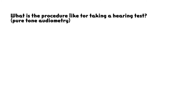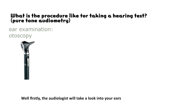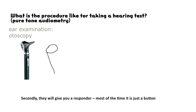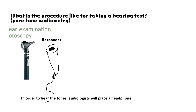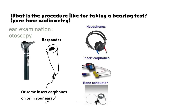What is the procedure like for taking a hearing test? Firstly, the audiologist will look into your ears to check if there is any wax or abnormalities which may affect the test result. Secondly, they will give you a responder — most of the time just a button — and you will be asked to press it every time you hear a tone, even the softest one. In order to hear the tones, audiologists will place a headphone or insert earphones on or in your ears.